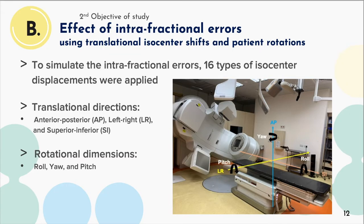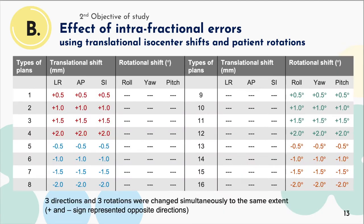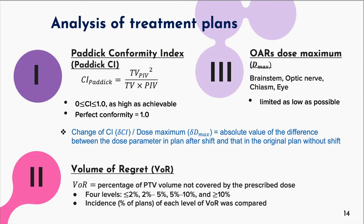To simulate the intrafractional errors, 16 types of isocenter displacements — including AP, LR, SI translations, and roll, yaw, and pitch rotations — were hypothetically applied to each original plan of both approaches. Translational shifts within 2 mm with every 0.5 mm increment, and rotational shifts within 2 degrees with every 0.5 degree increment were tested. The dose coverage of PTV was evaluated by Paddock CI and volume of regret.